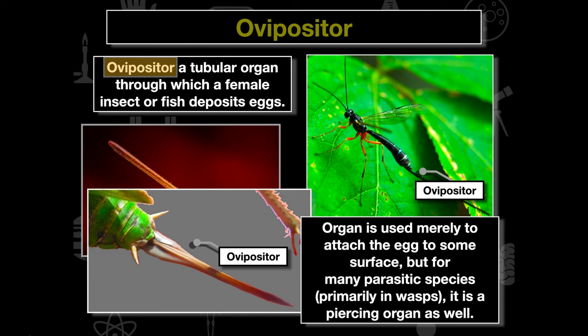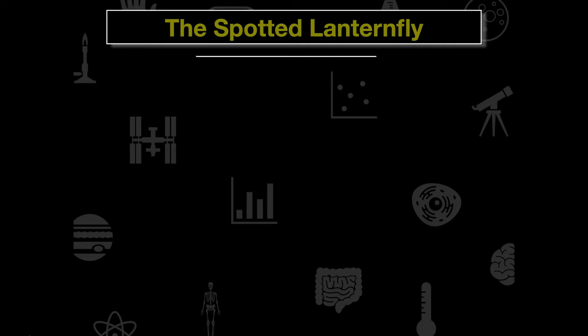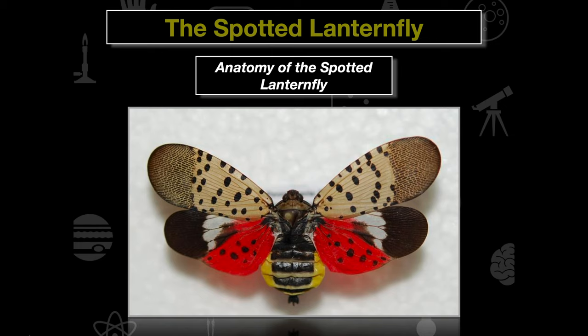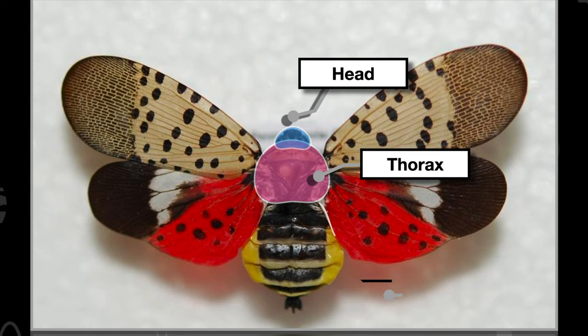Ovipositors don't have to have this long spear-like structure, but in parasitic species they usually do. When looking at our lanternfly, we want to see if an ovipositor — or a smaller version of one — is present. The goal of our lab is to look at the spotted lanternfly. When we place it on the tray, we'll spread and pin out the wings, and we'll observe the head, thorax, and abdomen.